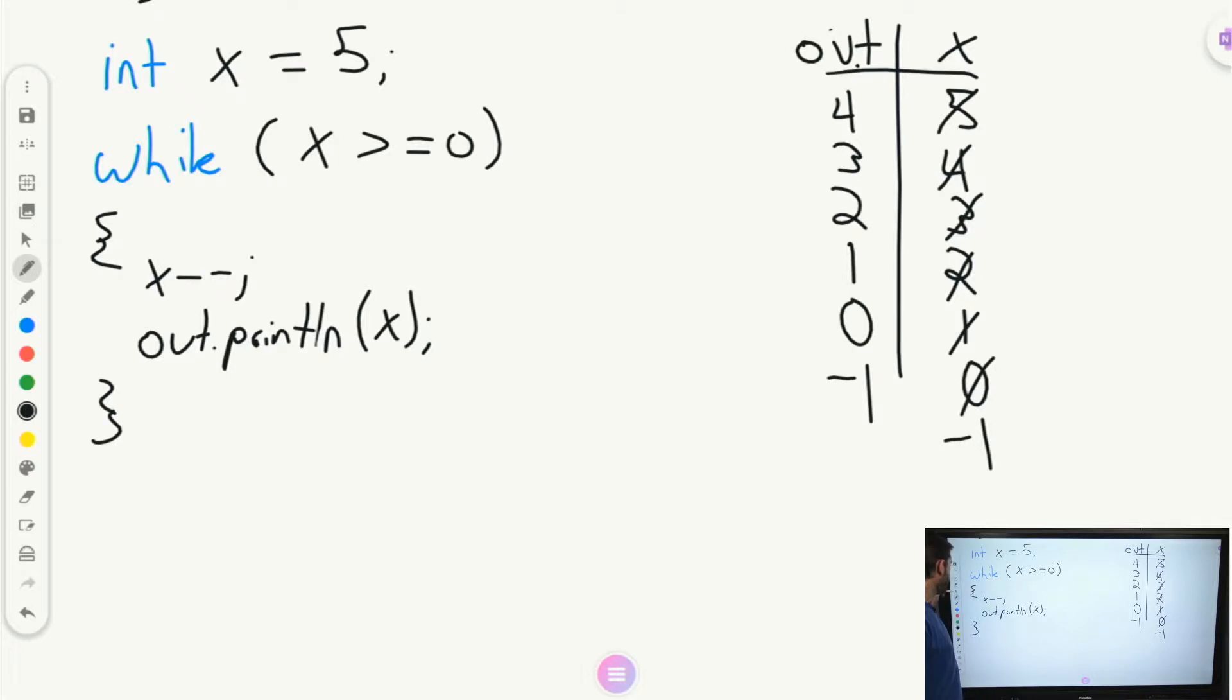So in this case, you see that because we added the equal sign, as we've discussed before about how the opposite of greater than is less than or equal to, because we need to capture that same number in the middle, by adding the equal sign, we actually add one more step to the loop. So that adds one more. Right? And because it adds one more, we get into the negatives.